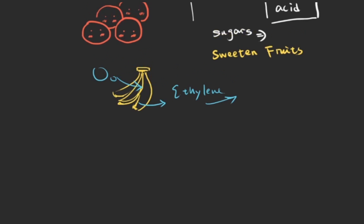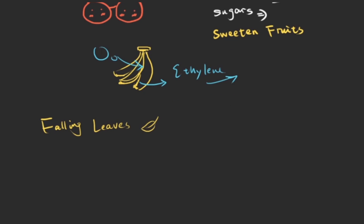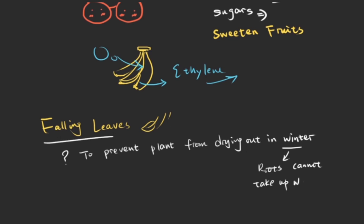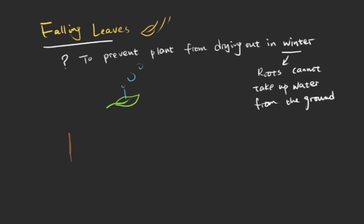Now let's think about falling leaves. Falling leaves are just beautiful, but why is it necessary for the leaves to fall? The answer is that falling leaves prevent plants from drying out in winter when roots cannot take up enough water from frozen ground. The falling of leaves decreases transpiration from leaf surface and thus protects the plant.